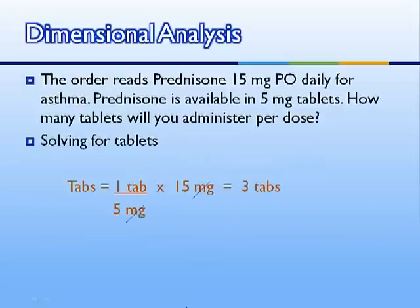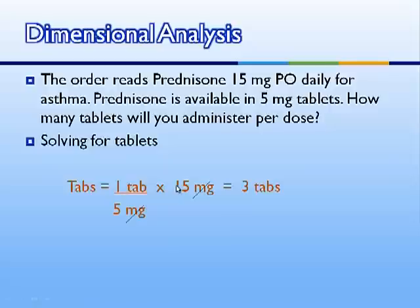Let's try another one. Prednisone 15 milligrams is ordered daily for a patient with asthma. Prednisone is available in 5 milligram tablets. How many tablets will we administer per dose? Again, we're solving for tablets, so we write tabs equals and start with tabs on top. We have 1 tablet equals 5 milligrams. We want to get rid of milligrams, so we multiply by 15 milligrams, cancel out the milligrams, and 15 divided by 5 is 3 tablets. We would give 3 tablets to administer our 15 milligram dose.